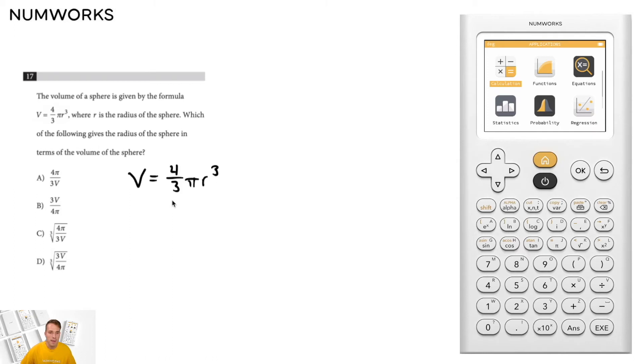Let's start by multiplying both sides by three-fourths. On the left side we'll have three-fourths v. On the right side, three-fourths times four-thirds gives us one, or just pi r cubed.